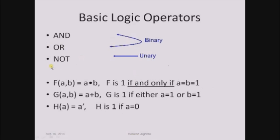The basic logical operators are AND, OR and NOT. AND and OR operators are called binary operators because they can operate on two variables. The NOT operator is called a unary operator because it operates only on one variable. For example, f(a, b) = a dot b, where dot is the symbol used for representing the AND operator.